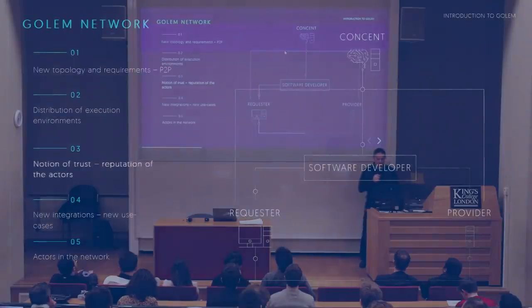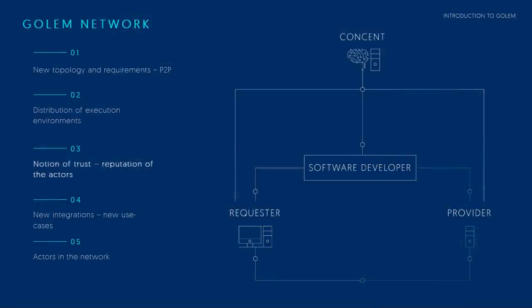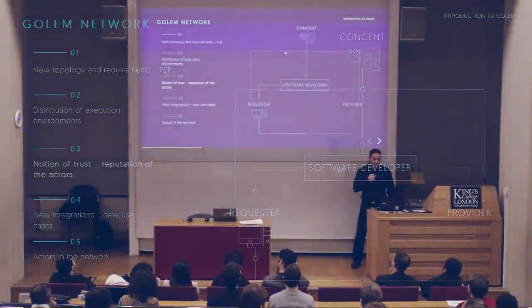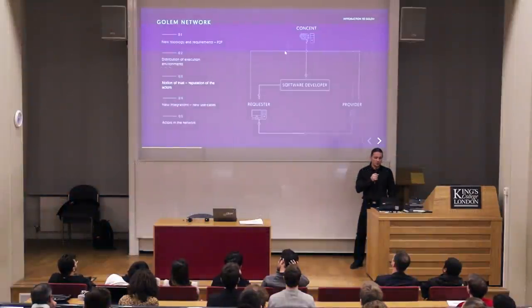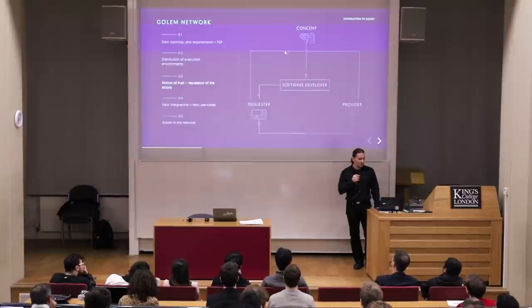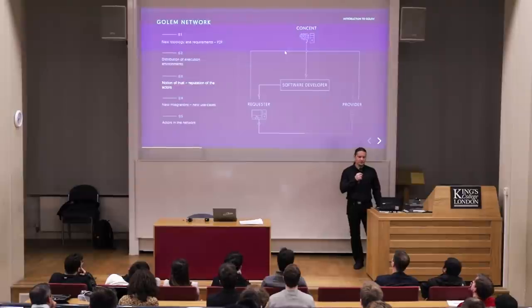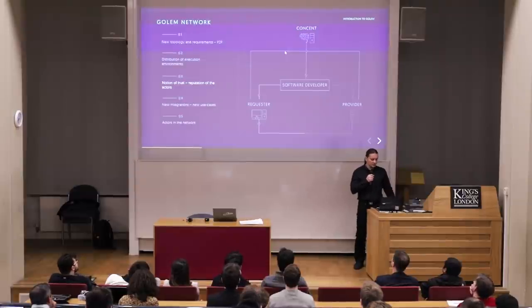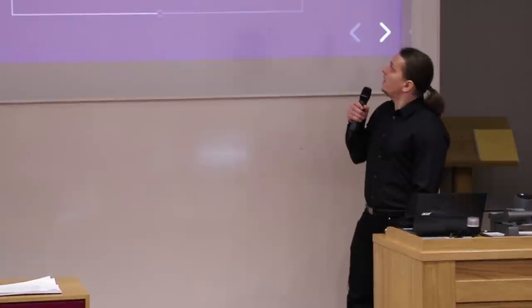Concent is a special purpose node or group of nodes used to both secure the network and implement any additional logic required to run computation and pay the developer for their software — in this context, that means a licensing scheme implemented by and in the concent.